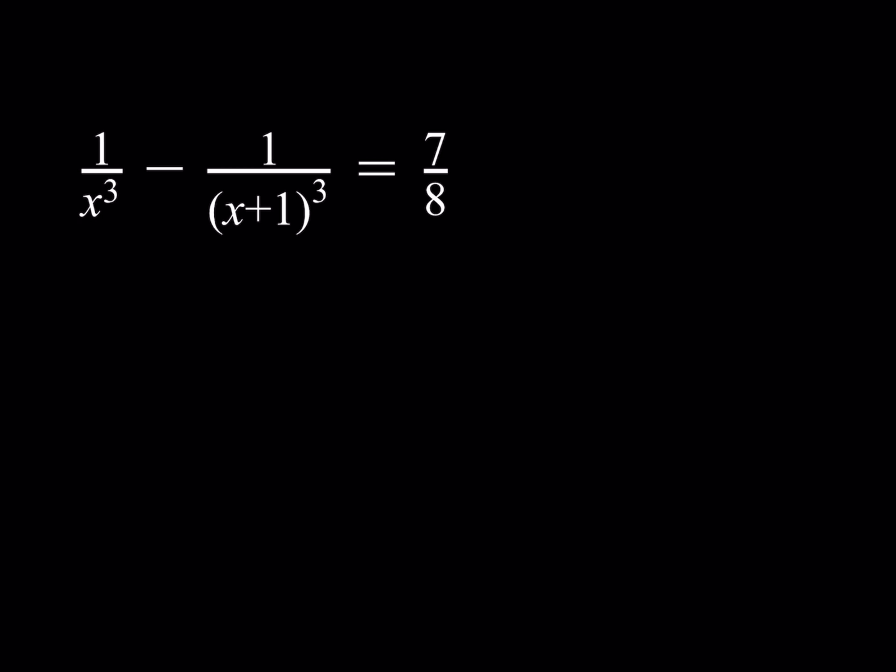We have 1 over x cubed minus 1 over (x plus 1) quantity cubed is equal to 7 over 8, and we're supposed to solve this equation. I know some of you will try to guess and check and you could probably find a solution that way.